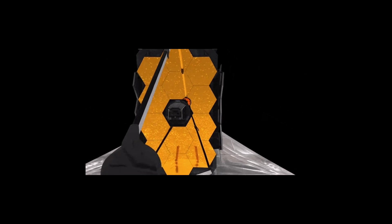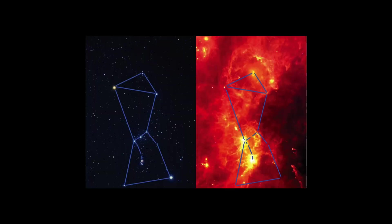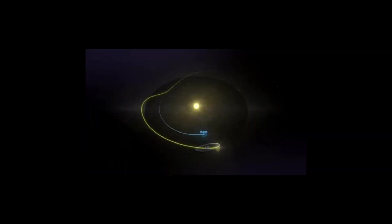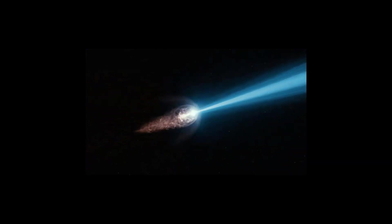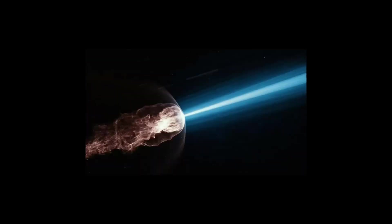The James Webb Space Telescope is a telescope designed to conduct infrared astronomy. It currently orbits the sun a million miles away from Earth at the 2nd Lagrange point. Gamma ray bursts are the most energetic and luminous electromagnetic events we've observed in our universe. They can release more energy in 10 seconds than our sun will emit in its lifetime.